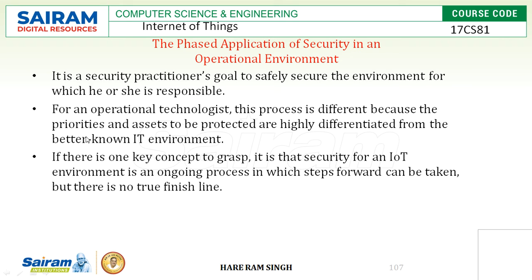This process is different because the environment needs to be protected based on the priority and value of effects. If there is one key concept, it is that security for an IoT environment is an ongoing process in which steps forward can be taken but there is no true finish line. Security is an ongoing process because every day new technology and new concepts are coming. Today if something is secured 100%, with new technology that can be compromised. If you provide new security, in future some technology can come which can compromise even the highest degree of secure infrastructure.